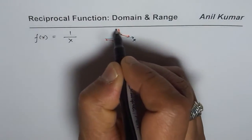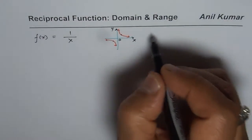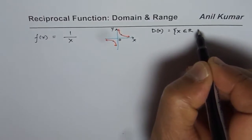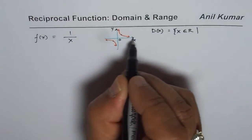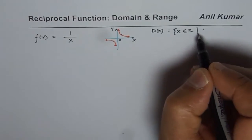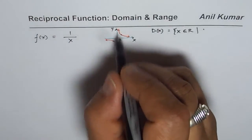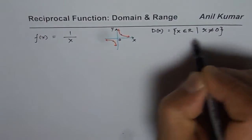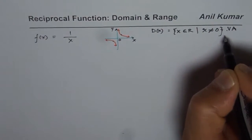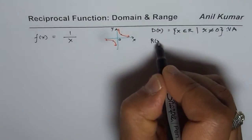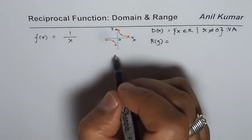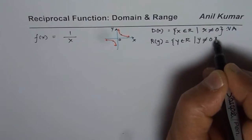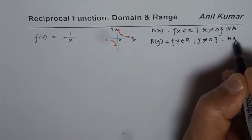The domain of this function is x belongs to real numbers and there is only one restriction, which comes from the vertical asymptote, so x is not equal to 0. As far as the range is concerned, you can have any y value except for 0, so y belongs to real numbers where y is not equal to 0, and that is because of the horizontal asymptote.